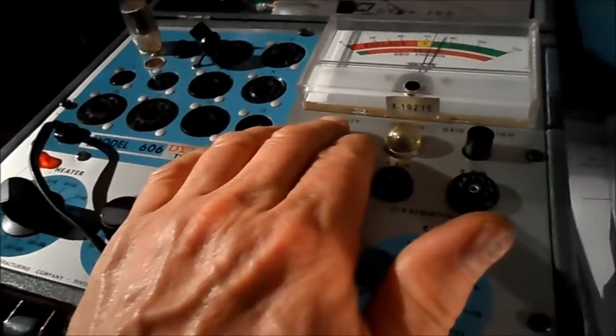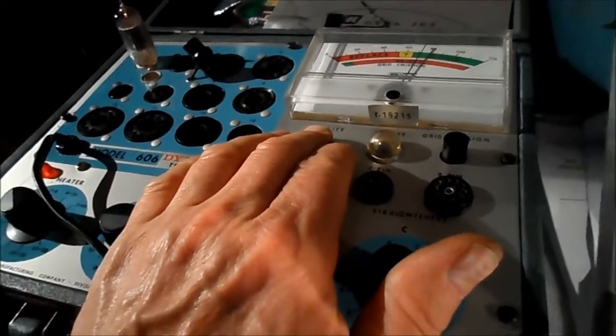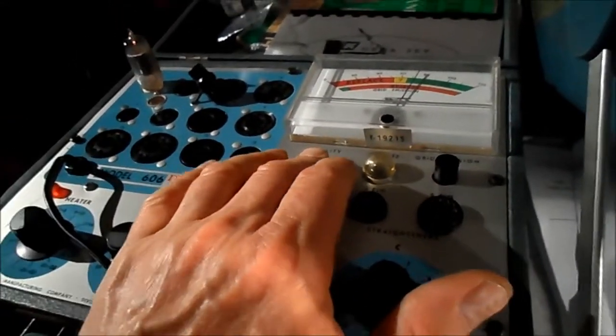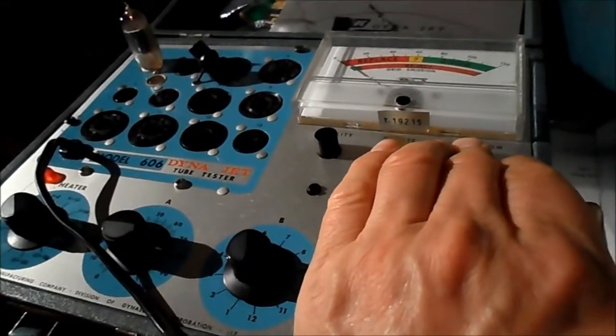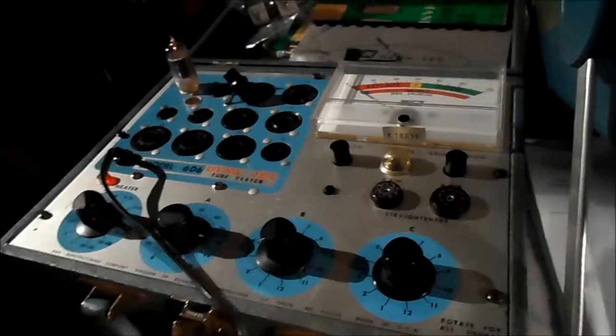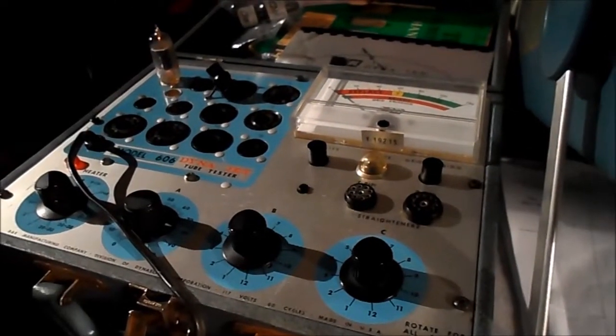And the 6BF6 test good. There's three sections to it and they all test. That's the lowest one of all of them. No shorts. I'll leave it on a few minutes to see if the grid emission rises, but that tube tests good.